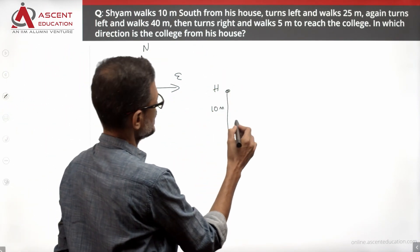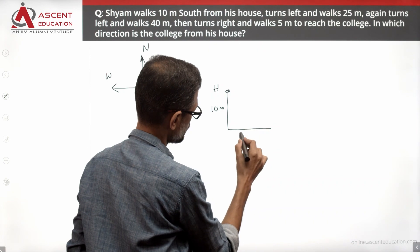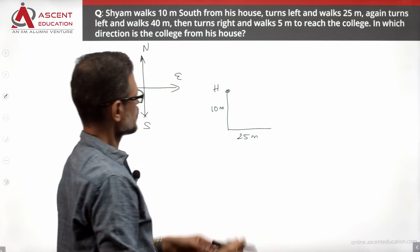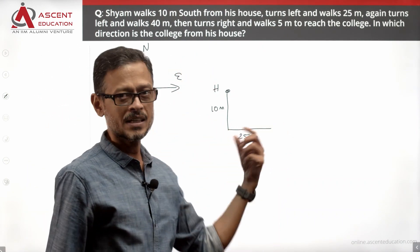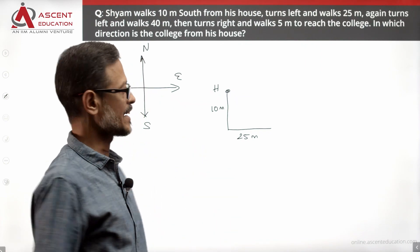Turns left. After walking south, he is turning left and then he is walking 25 meters. So after walking south and turning left, he is going to be walking in the eastern direction at this point.